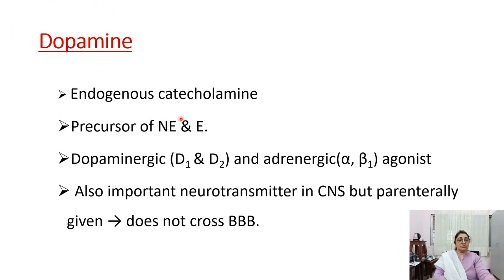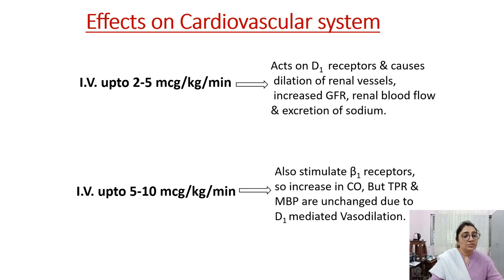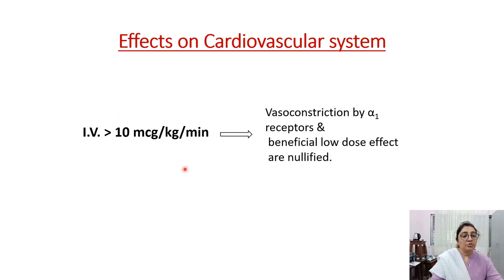Dopamine is an endogenous catecholamine and precursor of norepinephrine and epinephrine. Dopaminergic receptors: D1 and D2; adrenergic receptors: alpha and beta-1. It is an important neurotransmitter in the CNS but when given parenterally does not cross the blood-brain barrier. Effect on cardiovascular system: IV infusion up to 2–5 mcg/kg/min stimulates D1 receptors causing dilation of renal vessels, increased GFR, increased renal blood flow, and sodium excretion. At 5–10 mcg/kg/min, it stimulates D1 and beta-1 receptors, increasing cardiac output and causing vasodilation.